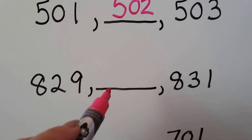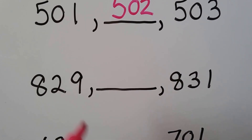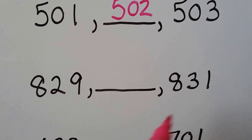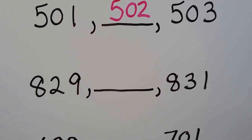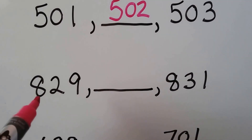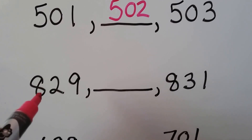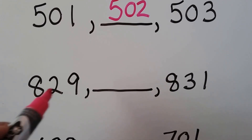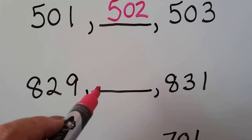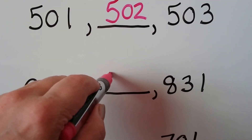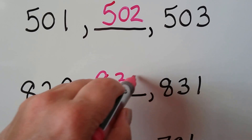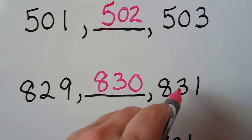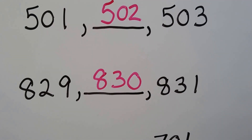Now what comes here between 829 and 831? When we count, we say 829, then 830, then 831.